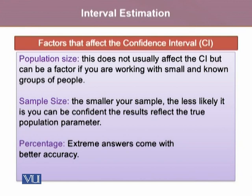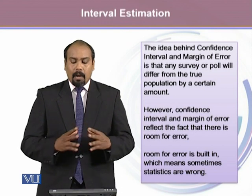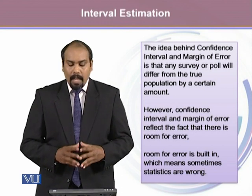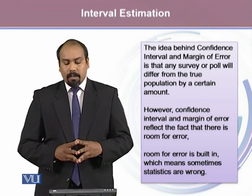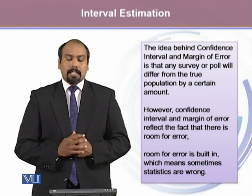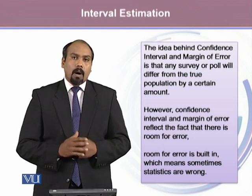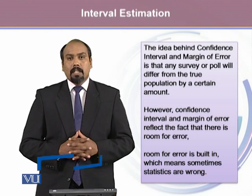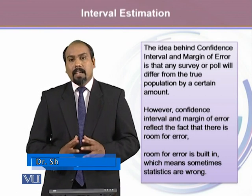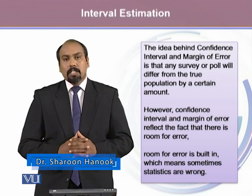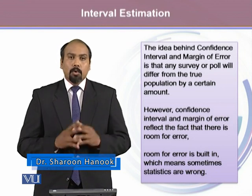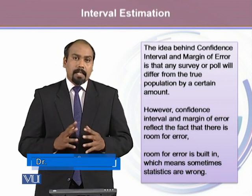The other is percentage. Extreme answers come with better accuracy. The idea behind confidence interval and margin of error is that any survey or poll will differ from the true population by a certain amount. However, confidence interval and margin of error reflect the fact that there is room for error. And this room for error is built in, which means sometimes statistics could be wrong.